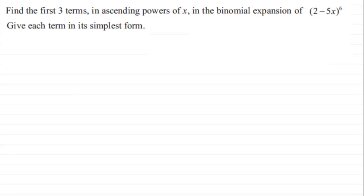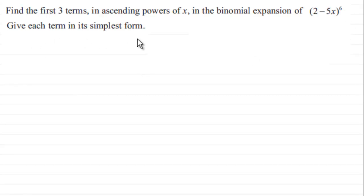Here we've got an example on the binomial expansion. If it's something you'd like to try, I'll just give you a moment to pause the video. We've got to find the first three terms in ascending powers of x in the binomial expansion of (2 minus 5x) all to the power 6, and we've got to give each term in its simplest form. Because we've got a positive integer power here — 6 — we can use this particular form of the binomial expansion.